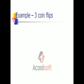Let's take a look at what an example would look like with three coin flips — again, either simultaneously or in succession. Here's what a tree diagram would look like. It's going to come up all at once, but I will do my best to explain how this comes about.